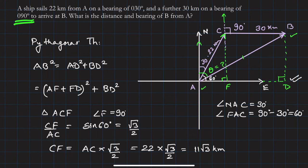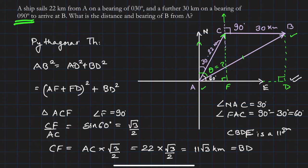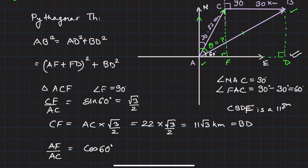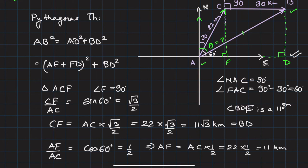Now, CF equals BD because CBDF is a parallelogram — all angles are 90 degrees — so BD = 11√3. Next, to find AF: AF/AC = cos 60° = 1/2, so AF = AC × 1/2 = 22 × 1/2 = 11 kilometers.